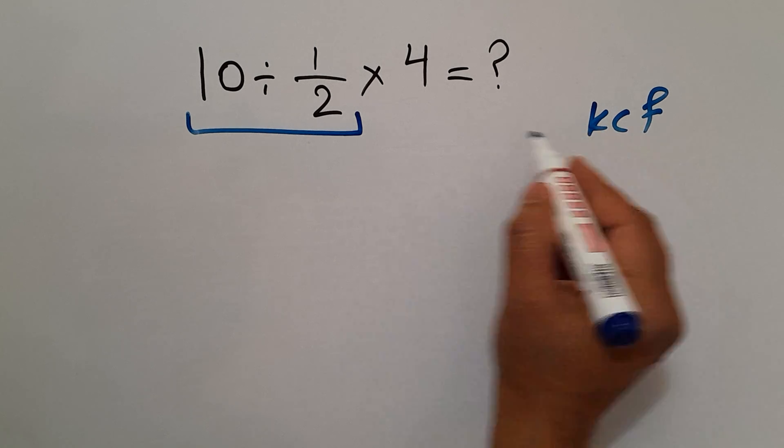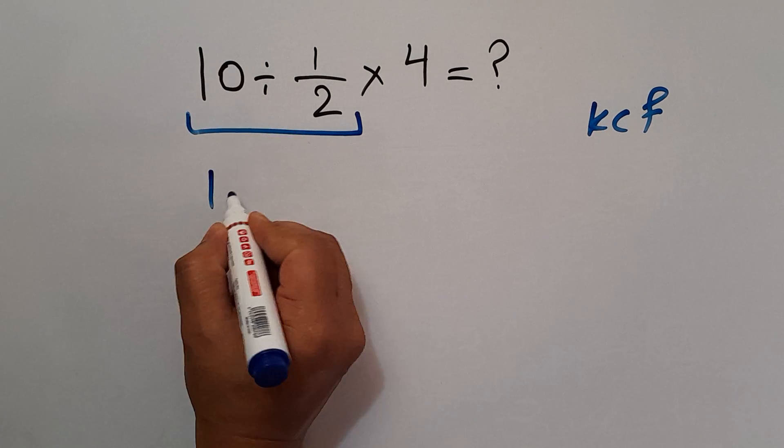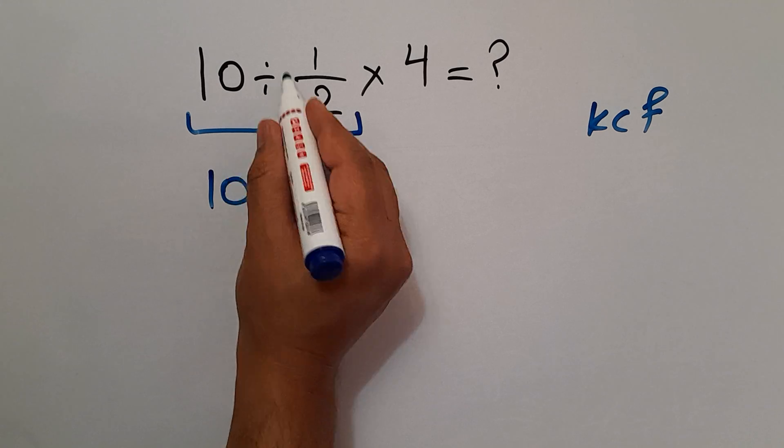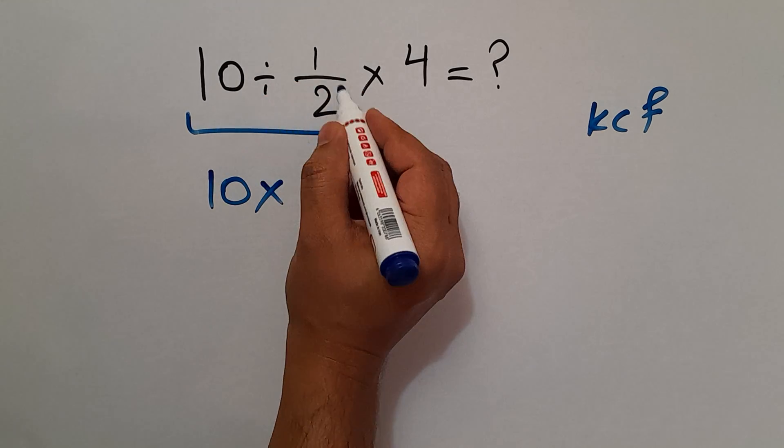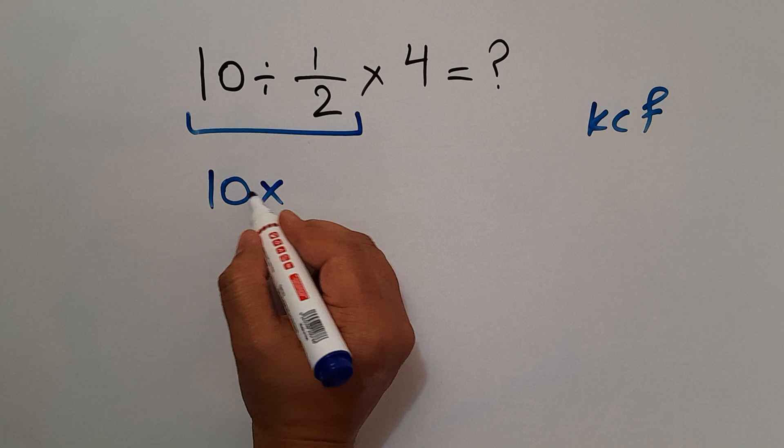Keep the first fraction which is 10, change division to multiplication, and flip the second fraction. 10 times just 2 and times 4.